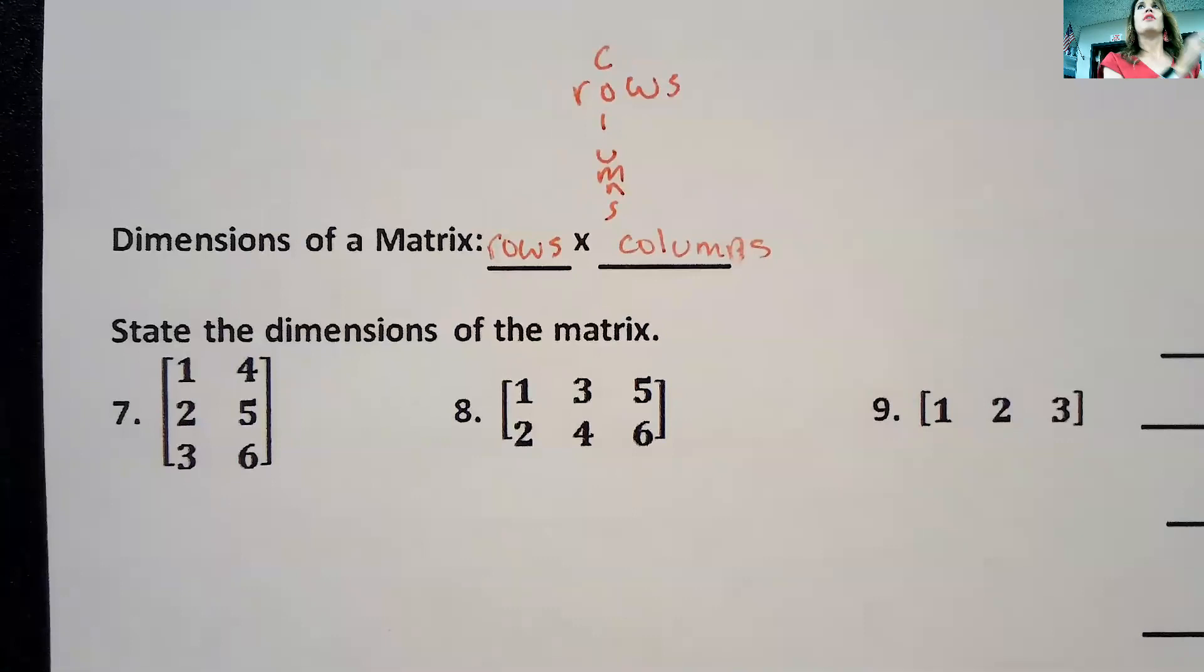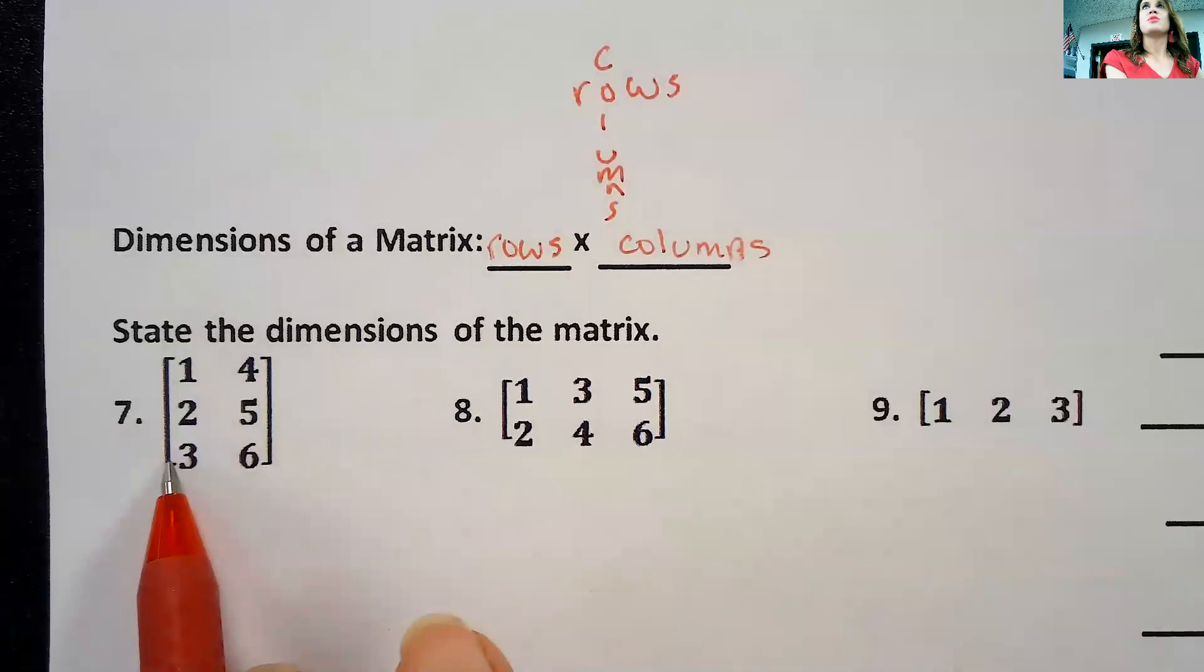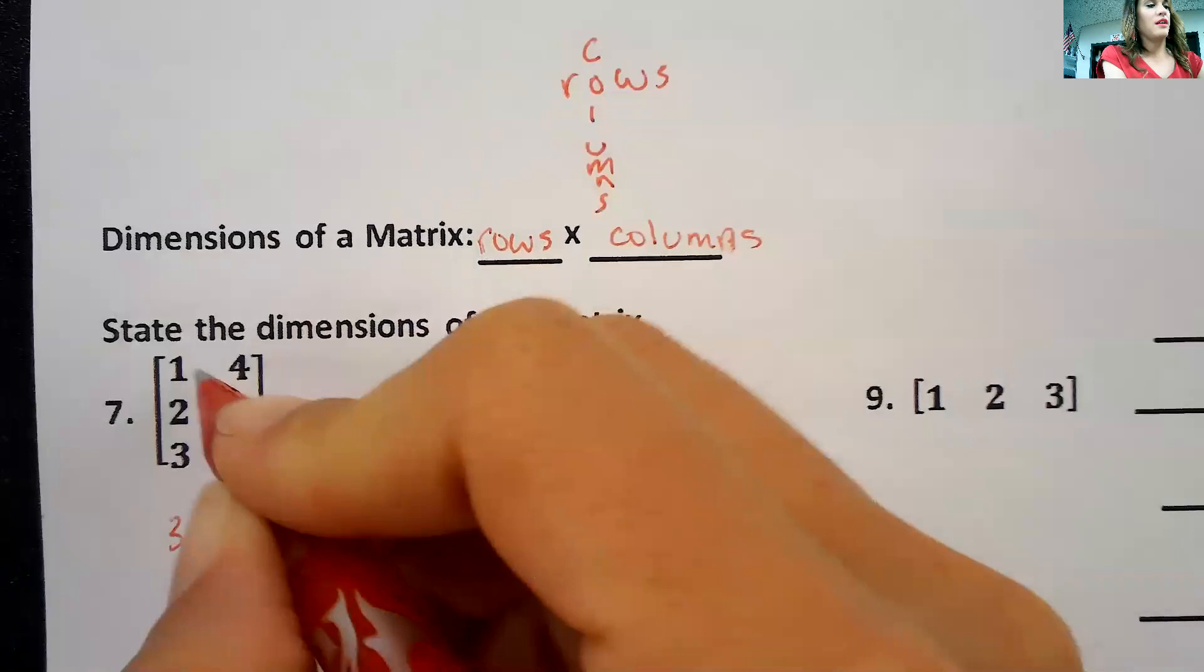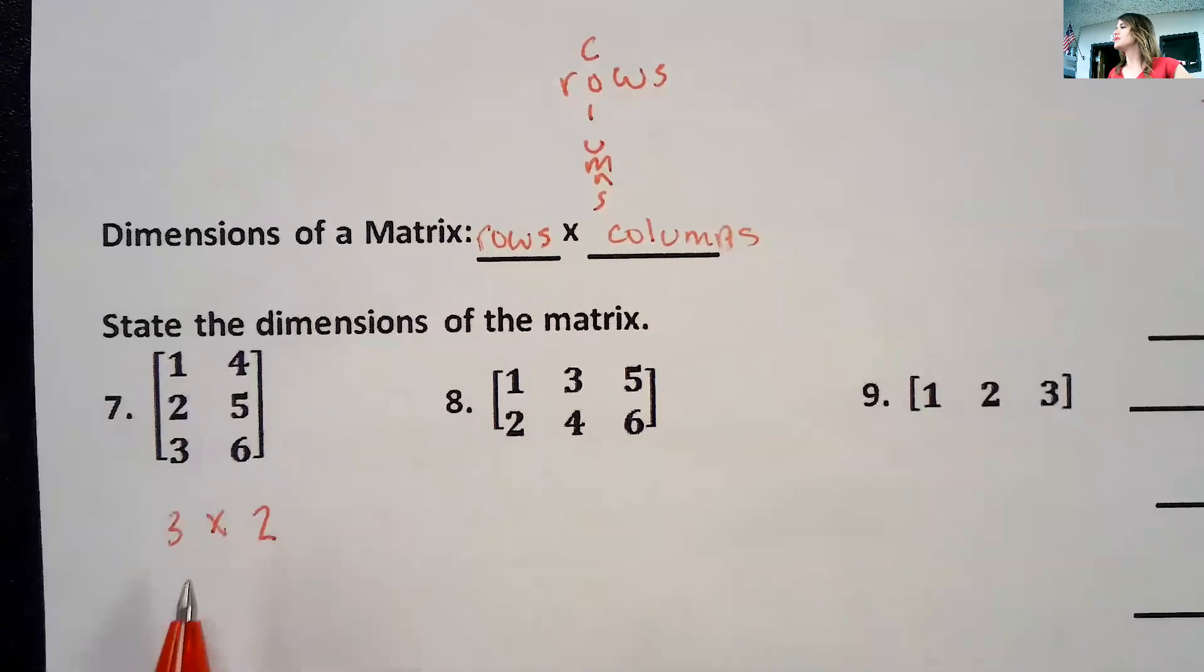So when you go to count them, when we say rows, this one has three rows. It has three rows by two columns. So this one, when you say what's the matrix, you would say this is a three by two matrix.